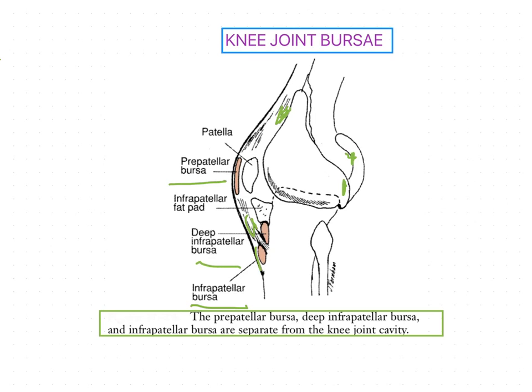The deep infrapatellar bursae is located between the patellar ligament and the tibial tuberosity, and is separated from the synovial cavity of the joint by the infrapatellar fat pad. The deep infrapatellar bursae helps to reduce friction between the patellar ligament and the tibial tuberosity.